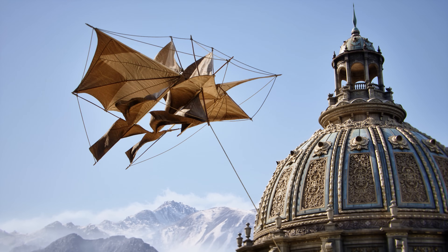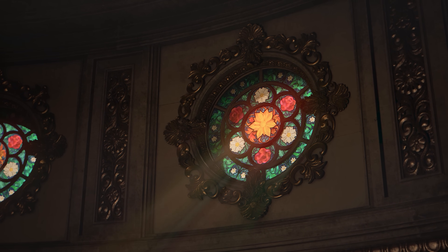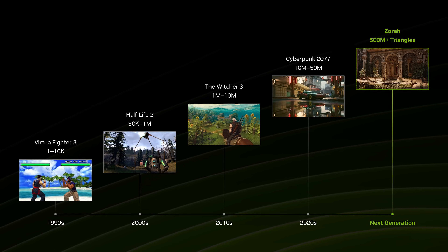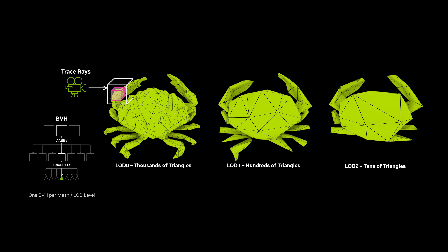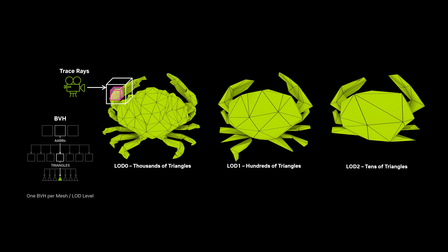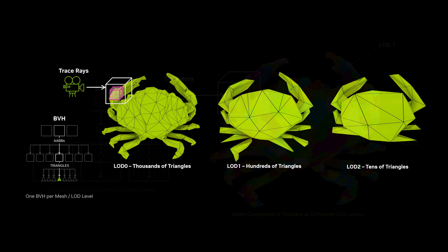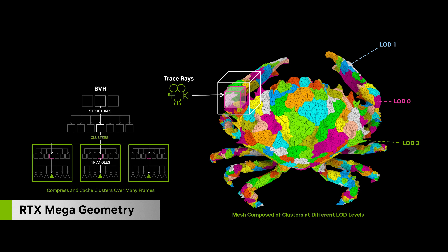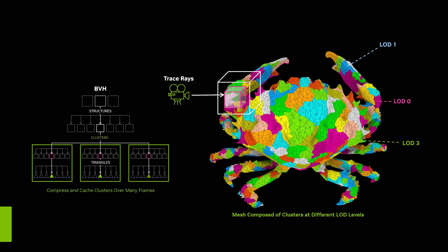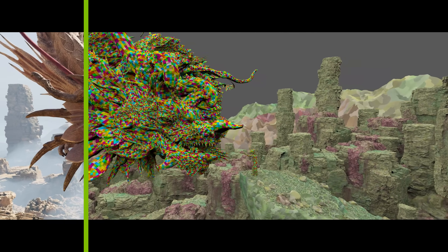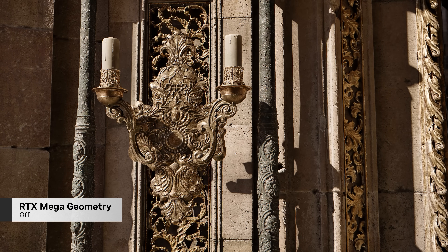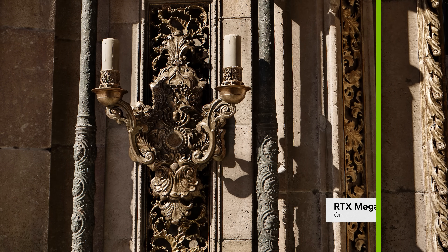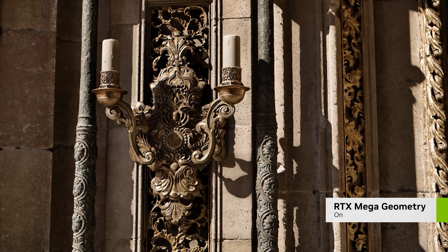Driven by rising expectations for visual fidelity and the development of advanced geometry systems like Unreal Engine's Nanite, geometric complexity has grown exponentially over the past 30 years. To tackle this complexity, RTX MegaGeometry rebuilds geometric data structures used for path-tracing in real-time, delivering up to 100 times more ray-traced triangles per frame. This breakthrough powers massive, detailed worlds and infinitely complex characters.